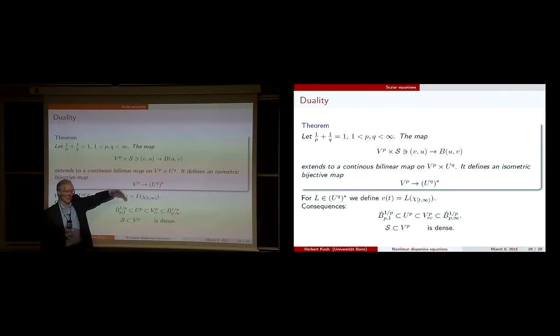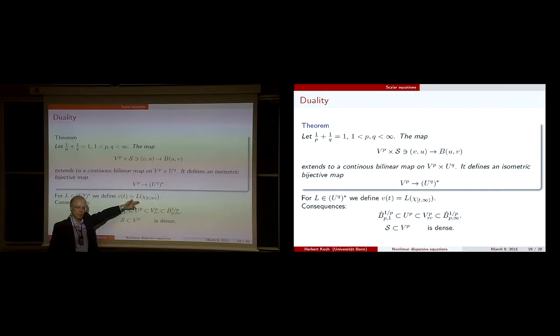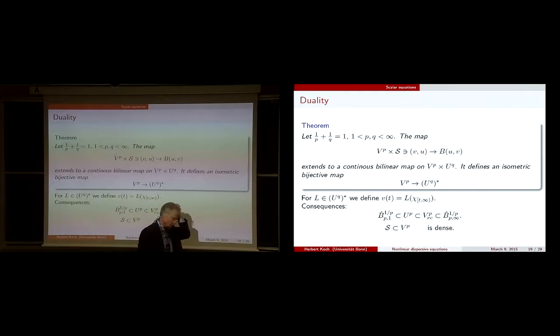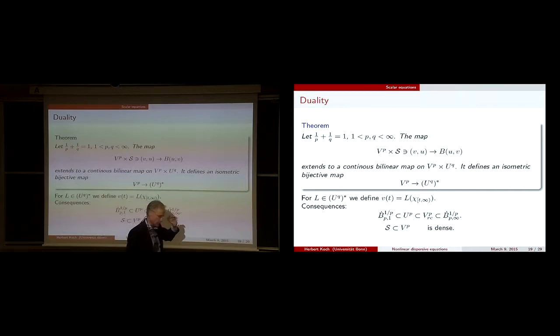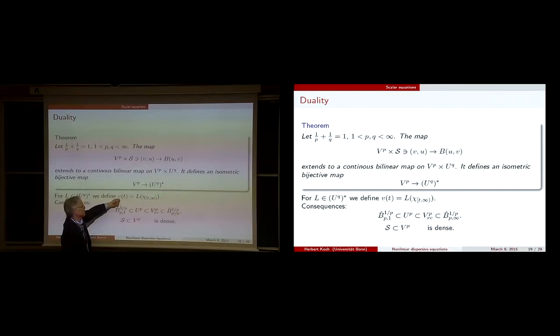How do we get a representation? We evaluate L at the characteristic function, which is an atom. To prove the norm estimate, one has to show that the V^p norm of V is bounded by the norm of the operator L. This involves looking at the p-variation — looking at the partition, choosing an appropriate atom — and you get the bound of V in V^p.